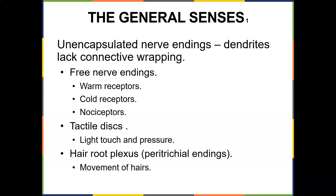The general senses include unencapsulated nerve endings, which are dendrites that lack a connective wrapping. These are usually free nerve endings — warm receptors, cold receptors, and nociceptors. So if asked on a quiz, nociceptors are free nerve endings. We also have tactile discs, which sense light touch and pressure, and the hair root plexus, which senses insects crawling on skin through hair movement — those are peritracheal endings.